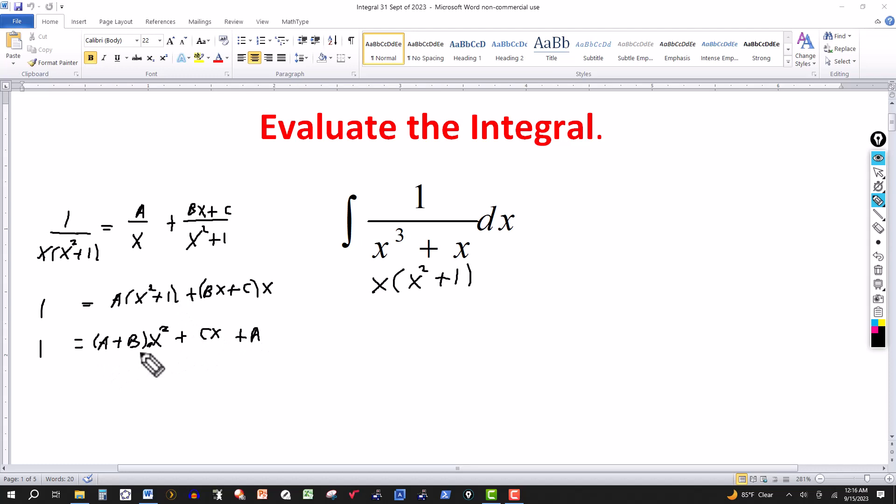So I have an x squared term on the right side with coefficient A plus B. On the left side, I don't have an x squared term, so the coefficient there is 0. This has to be an identity, so since I don't have an x squared on the left side, this coefficient A plus B has to equal 0.